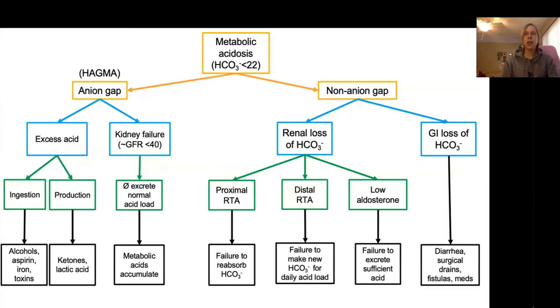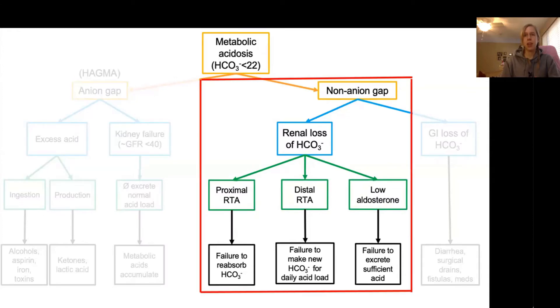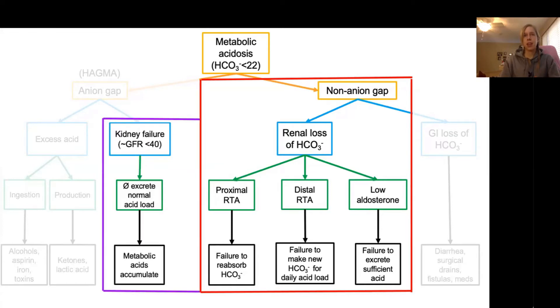To start out, a quick reminder of the tree of metabolic acidosis. We have the anion gap side and the non-anion gap side. Today we're going to be focusing on the non-anion gap side with the renal loss of bicarbonate, which is caused by various different renal tubular acidosis. But before we dive into RTAs, it's important to realize that kidney issues are on both sides of this tree with both the anion gap and non-anion gap side. So it's really important to understand the differences between these two etiologies.